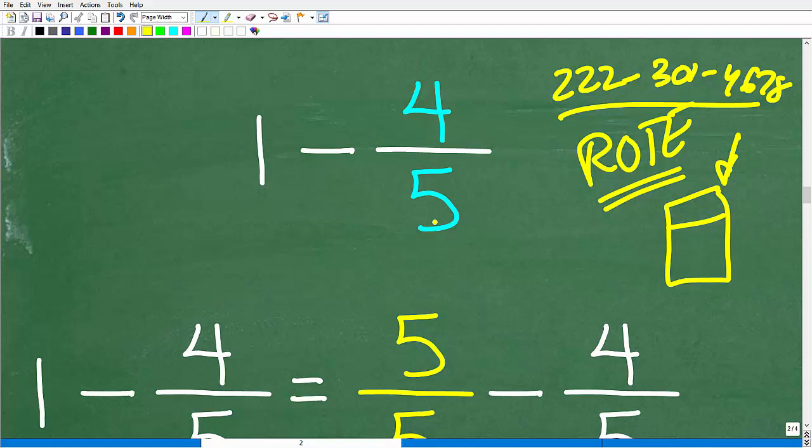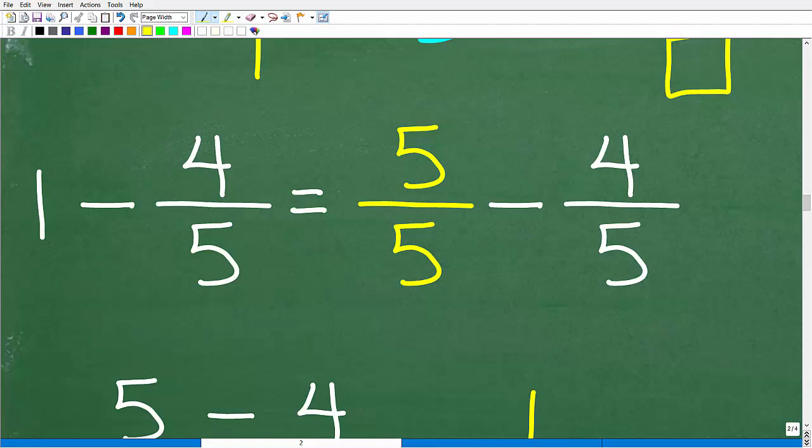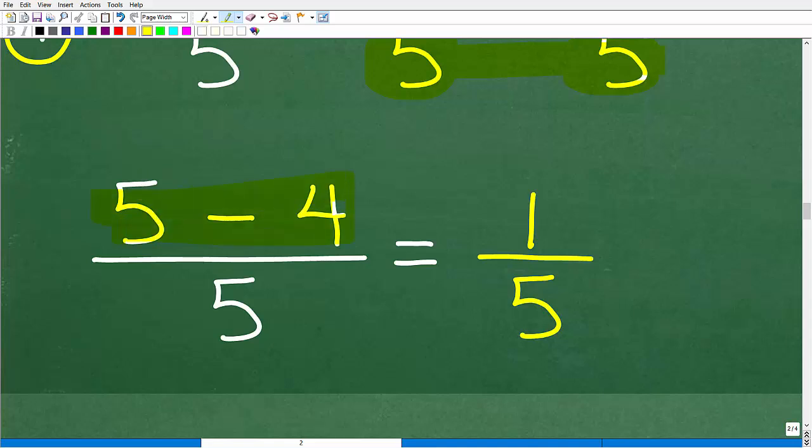So one minus four-fifths is what? We have to subtract fractions. A lot of you are going to say if we have one and you take away four-fifths, there's only one-fifth left. That is absolutely right. Hopefully most of you are able to do this without going through these calculations. But if you had to, we need to subtract one minus four-fifths. We need to think of one as a fraction. That's one over one. Now we need to get a common denominator, which is going to be five. One is the same thing as five over five because five divided by five is one. You can't add or subtract fractions unless you have the same denominator. So one minus four-fifths is the same thing as five over five minus four over five. We're simply going to subtract the numerators. We have five minus four, which is one over five or one-fifth.